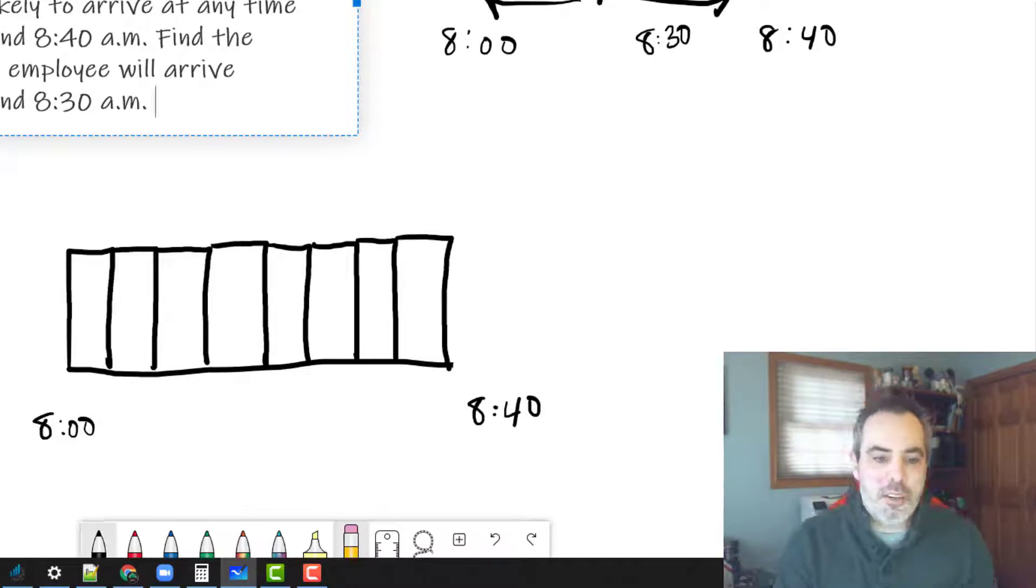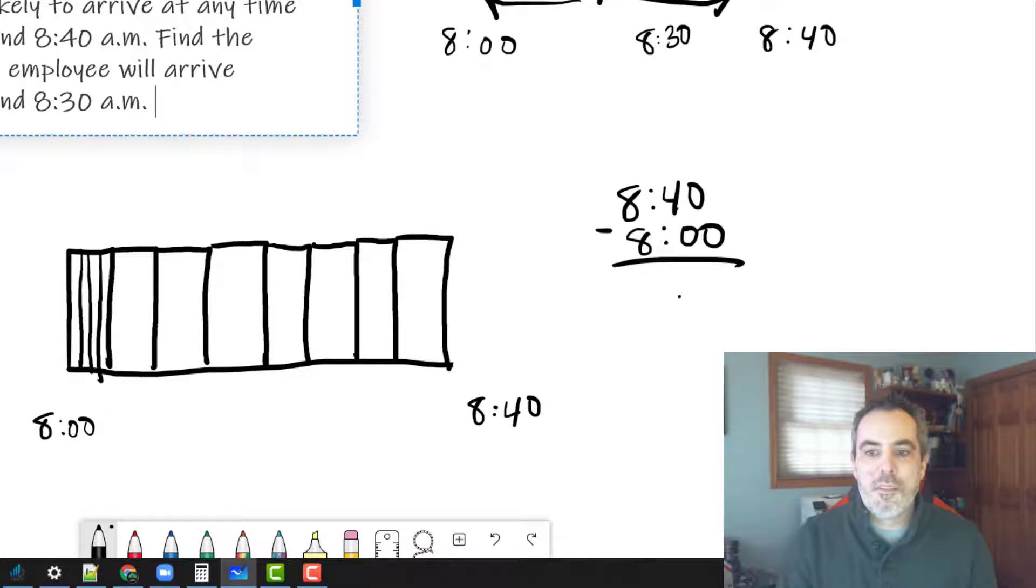But imagine now dividing these into minutes. Every one of these things is divided into five minutes. There really is 8:40 minus 8:00, there is 40 different times that he is equally likely to arrive.